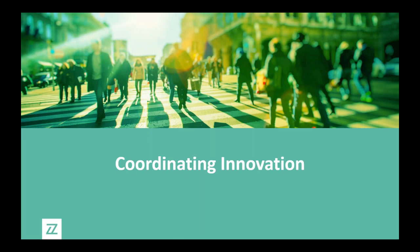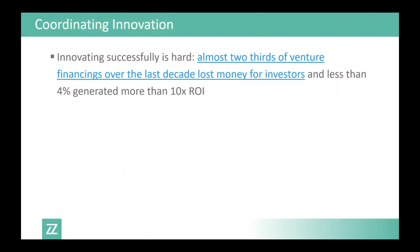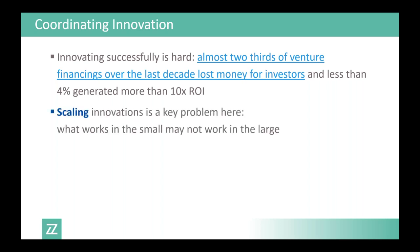The second role is coordinating innovation. Architects are relatively unique in their organization for this. If you look at innovation success — almost two-thirds of venture-capital-financed startups lost money for their investors, and only four percent generated more than ten times ROI. It is quite difficult to innovate, and one big issue is scaling innovations. Most startups fail in the phase where they need to scale up — coming up with an innovative idea is not the complicated part; making it work in practice at scale is the real challenge.